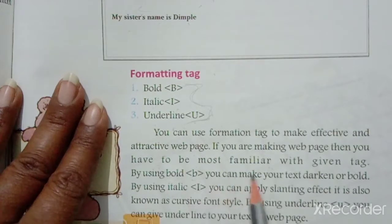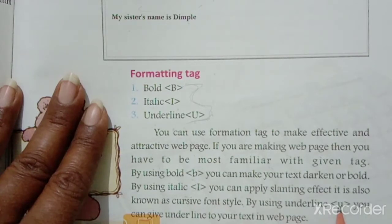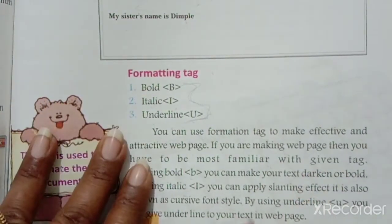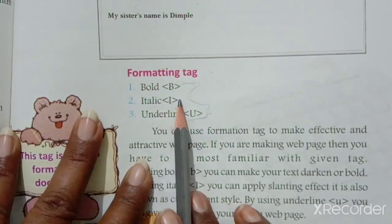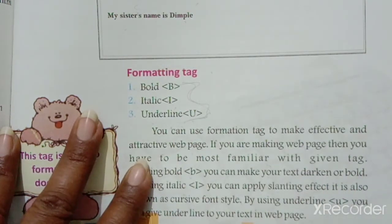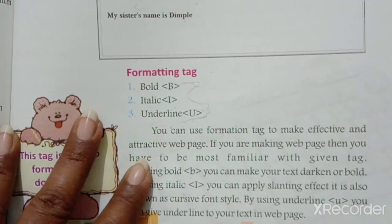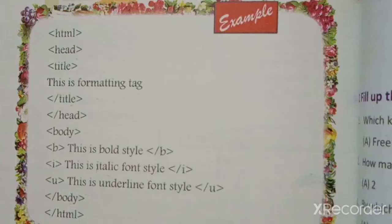By using Bold, you can make your text darkened or bold. By using Italic, you can apply a slanting effect — also known as cursive font style. By using Underline U, you can give an underline to your text in a web page. Using these three tags, you can make your documents more effective and attractive.